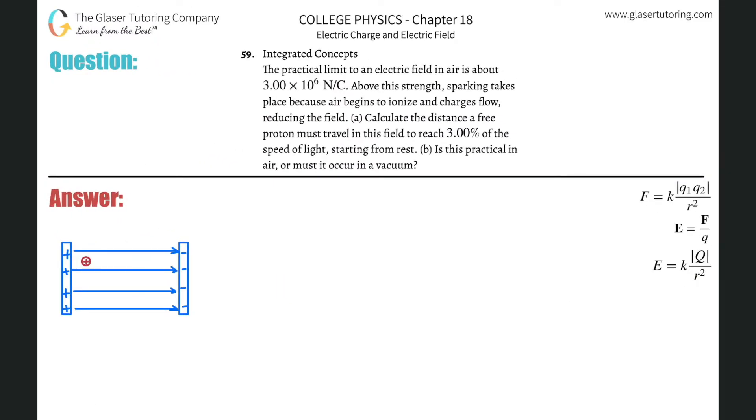Number 59, integrated concepts. The practical limit to an electric field in air is about 3 times 10 to the 6 newtons per coulomb. Above this strength, sparking takes place. Letter A, calculate the distance a free proton must travel in this field to reach 3% of the speed of light starting from rest.